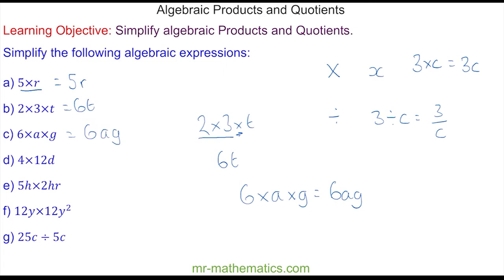Do you want to try and simplify the expressions d to g? You can pause the video and resume it when you're ready. For question d, we do 4 times 12 which is 48, and that is 48d.